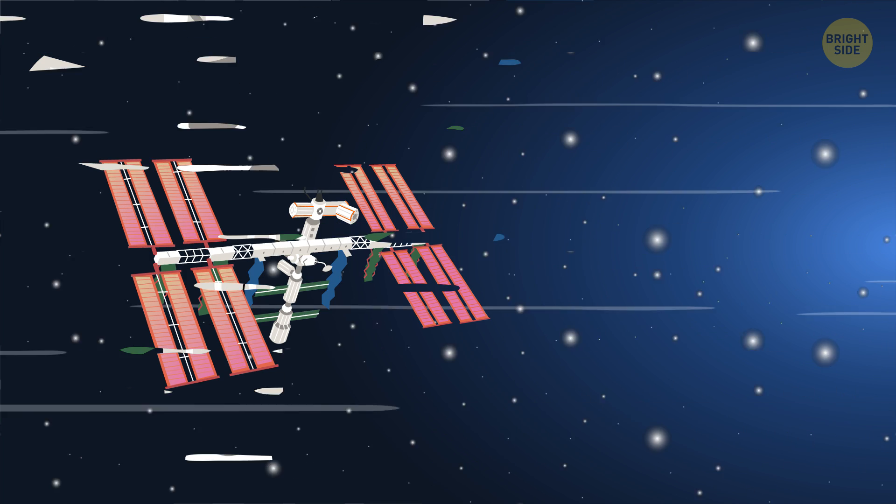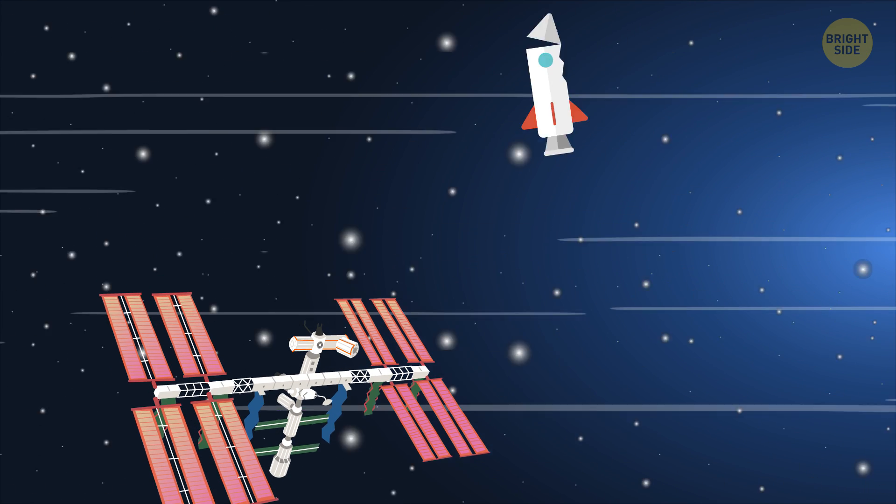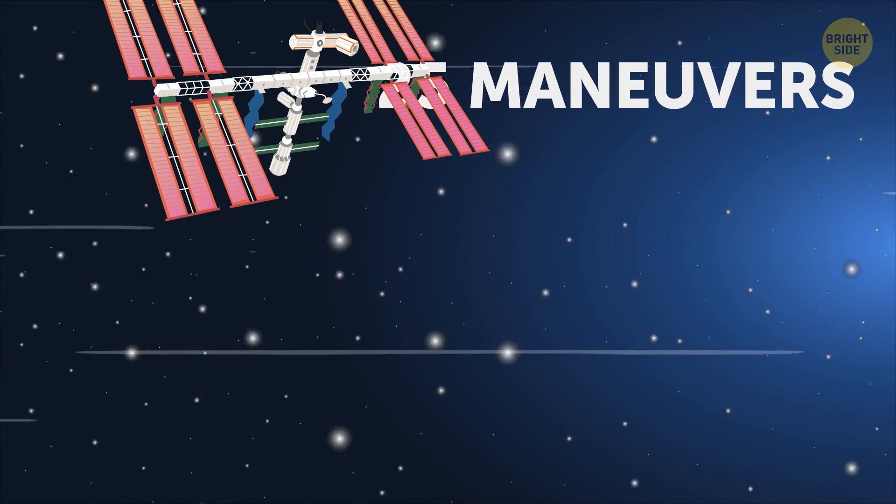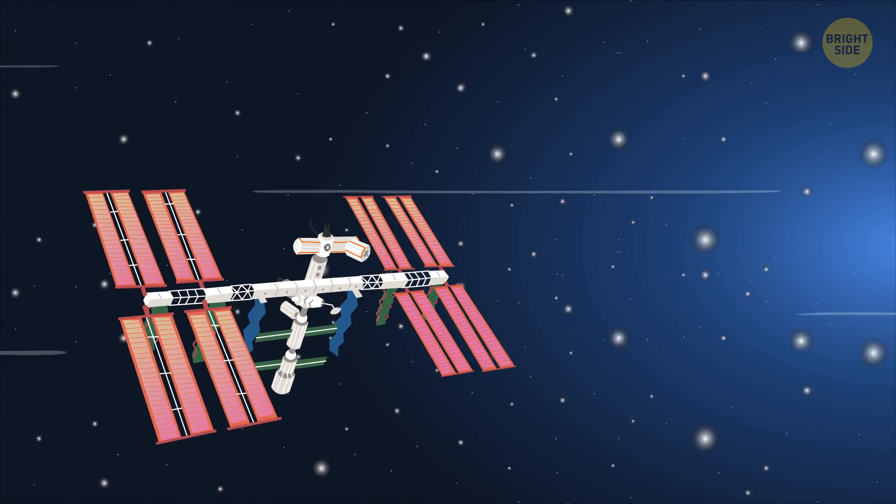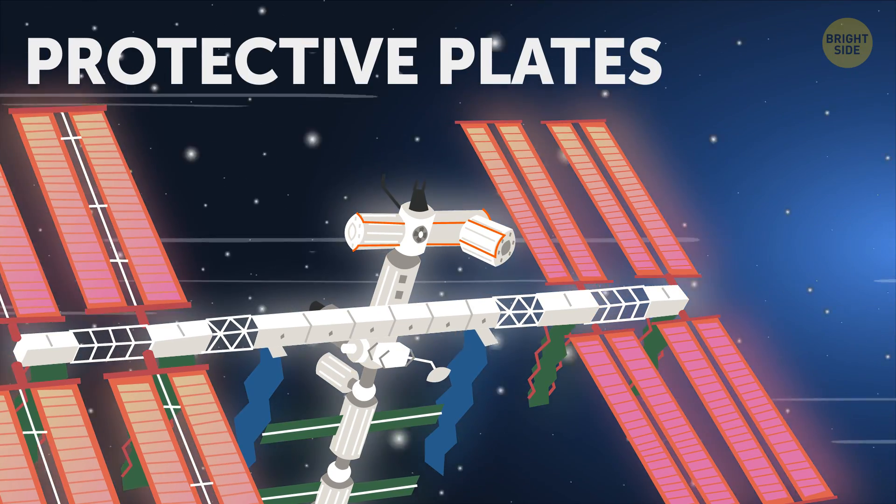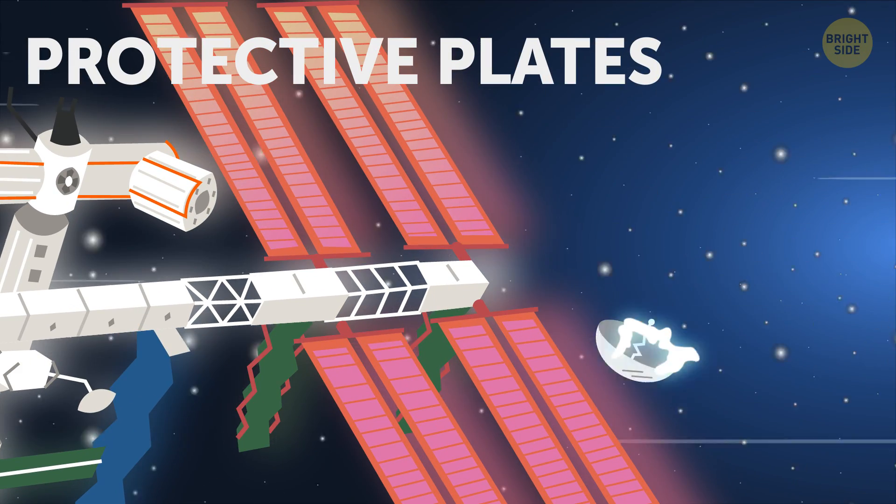In all of the ISS's 21 years, the station carried out 25 maneuvers to evade space debris. Plus, the station is covered with protective plates that guard against a tiny piece of debris shredding through it.